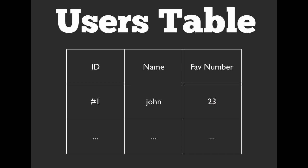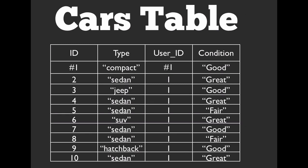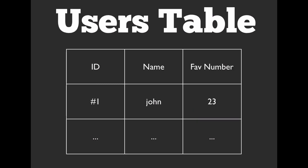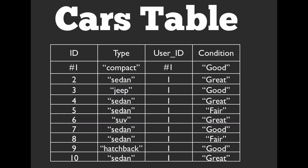If we look at a table of how we'd construct this, this would be our users table. Here we have a primary key of ID. Our user number one has the name John, and we can store additional information like favorite number. We then have a cars table where we store all information about our cars — we have primary keys on the left. The car with a primary key of one is a compact car in fairly good condition, and we have a user ID column that tells us what user owns it. That user ID matches the ID of John, so we are saying John owns all of these cars.